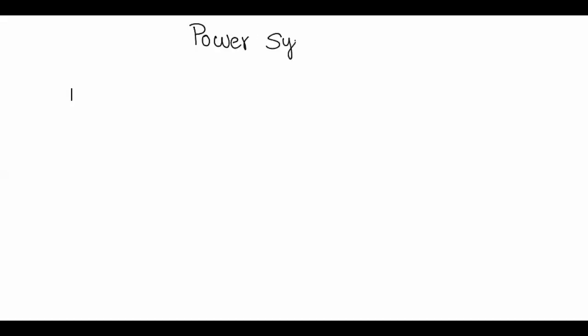Welcome to the ICE Gate Academy. Today we are going to discuss about power systems. Power systems will give a total of 10 to 12 marks depending upon the GATE paper — minimum of 10 marks and maximum of 12 marks. According to power systems we have many chapters, but today we are going to discuss about performance of transmission lines.